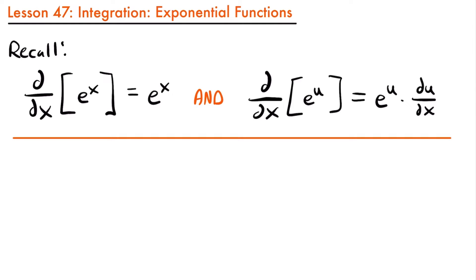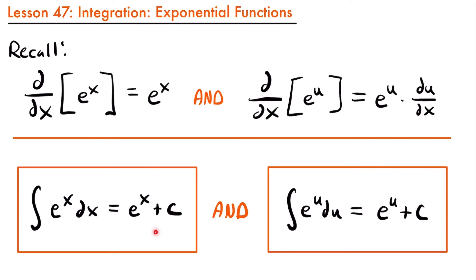So if we wanted to integrate e to the power of x, the answer would be a function whose derivative is e to the power of x. This is simple because the derivative of e to the power of x is e to the power of x — so the antiderivative is right here, it's e to the power of x. That gives us our integration rule: the integral of e to the power of x dx equals e to the power of x plus c.